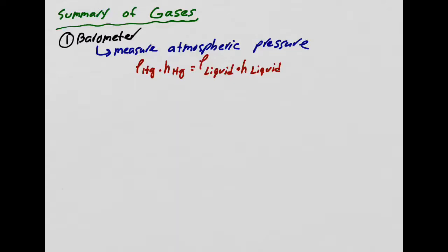Then we talked about the ideal gas law: PV = nRT. When you're using PV = nRT, what you really need to pay attention to are the units. You need ATM, liters, moles, and Kelvin.